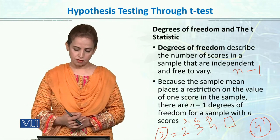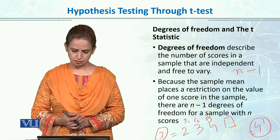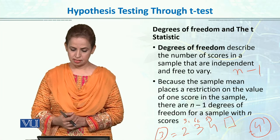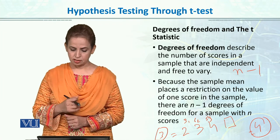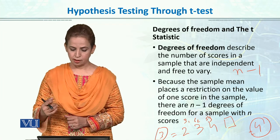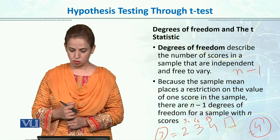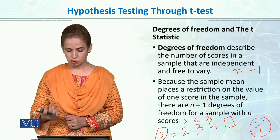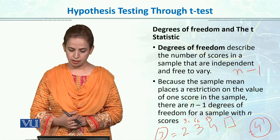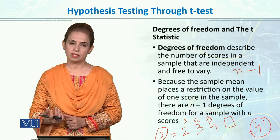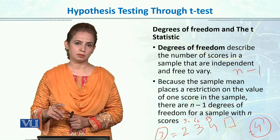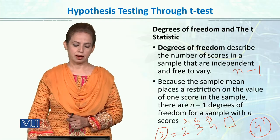Degrees of freedom basically is the number of scores in a sample that are independent and free to vary, and it is always equal to n minus 1. جتنا بھی آپ کا n size ہے n minus 1 — you will keep one cell free so you can vary that. Because the sample mean places a restriction on the value of one score in the sample, there are n minus 1 degrees of freedom for a sample with n scores — exactly that is why we do n minus 1.